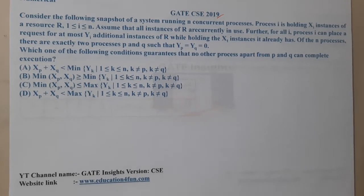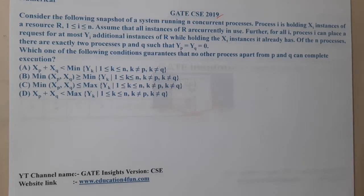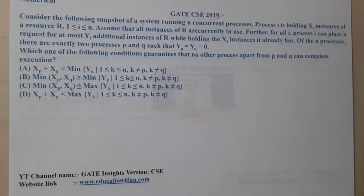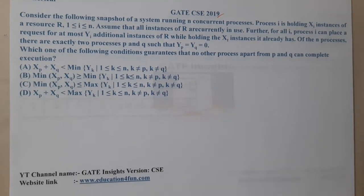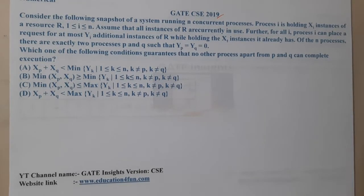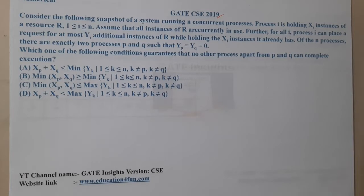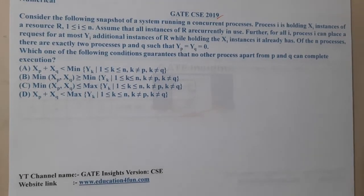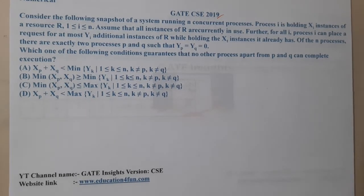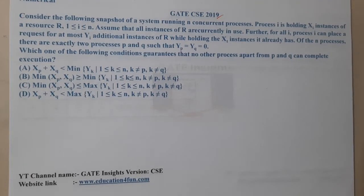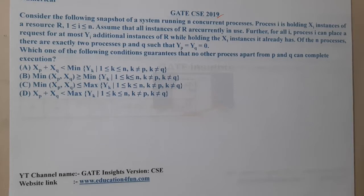The system is running n concurrent processes. Process i is holding x_i instances of a resource R, where 1 ≤ i ≤ n. Assume that all instances of R are in use. Further, process i can place a request for at most y_i additional instances of R while already holding x_i instances. Of the n processes, there are exactly two processes p and q such that yp = yq = 0. Which of the following conditions guarantees that no process apart from p and q can complete execution?